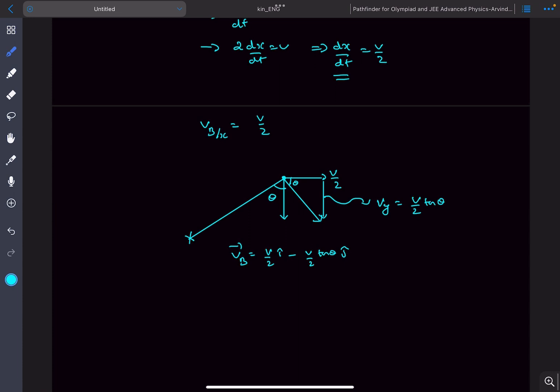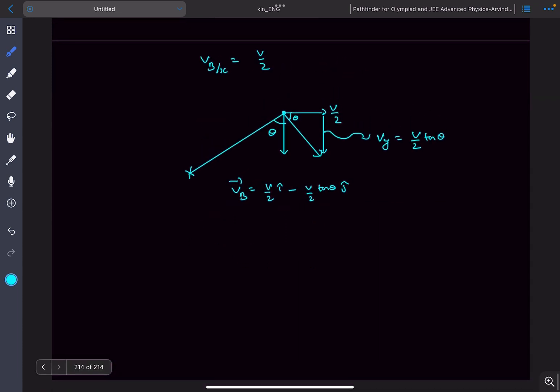Now as we want the acceleration of B we can simply differentiate the velocity vector and we'll get the acceleration of B. The derivative of V is A, so dV by dt would be A, so this would be A by 2 i cap. Now here we have to use product rule because even theta is varying with time. So if you differentiate the Vy it'll be A by 2 tan theta. We are going to keep the velocity constant and differentiate tan theta. So the derivative of tan theta will be secant squared theta multiplied by d theta by dt and this would be the component in the j cap direction.